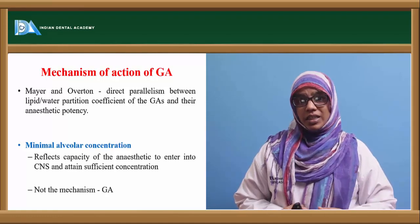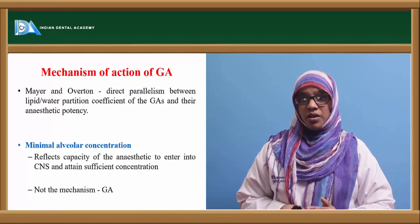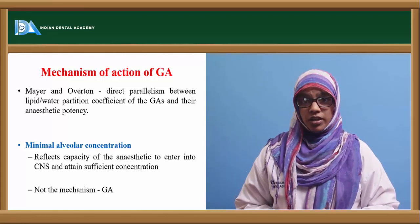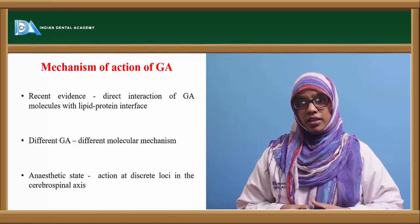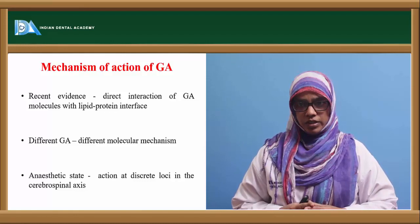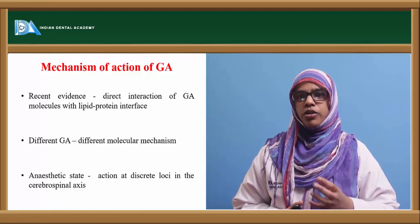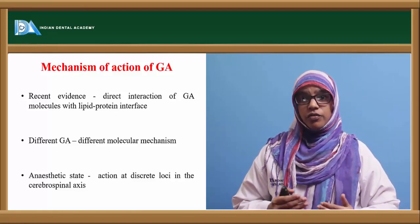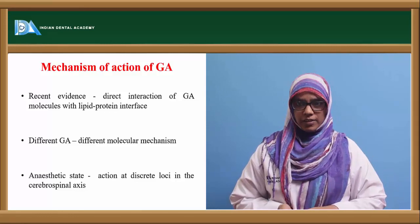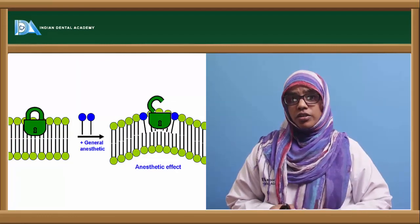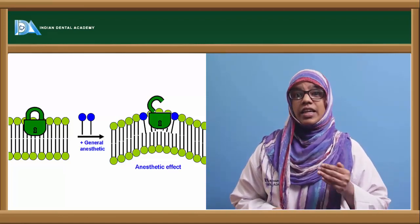MAC reflects the capacity of the anesthetic to enter the central nervous system and attain a sufficient concentration, but it does not describe the mechanism of general anesthesia. Recent evidence shows a direct interaction of general anesthetic molecules with the lipid-protein interface of the nerve. Different general anesthetics have different molecular mechanisms, and the anesthetic state results from action at different foci of the cerebrospinal axis — in contrast to local anesthesia, which acts on nerve conduction, general anesthesia acts at the synaptic level.